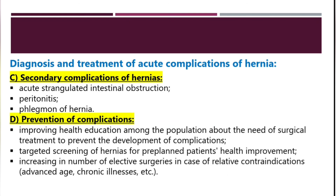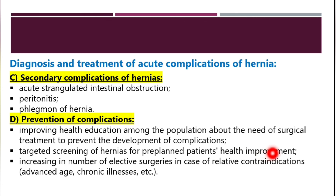Secondary complications of hernias include acute strangulated intestinal obstruction, peritonitis, and phlegmon of the hernia. These complications can be prevented by improving health education among the population about the need for surgical treatment, targeted screening of hernias in pre-planned patients, health improvement, and increasing the number of elective surgeries. In cases of contraindications such as advanced age or chronic illness, surgical management must be weighed accordingly.